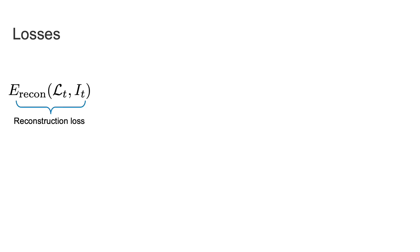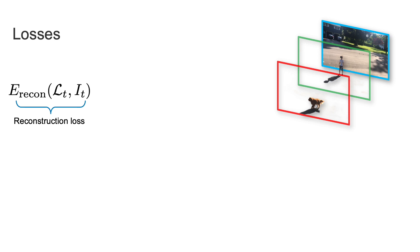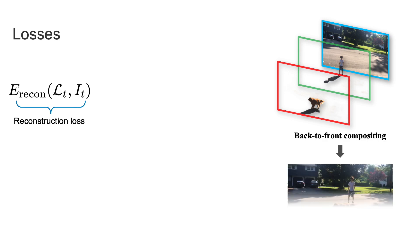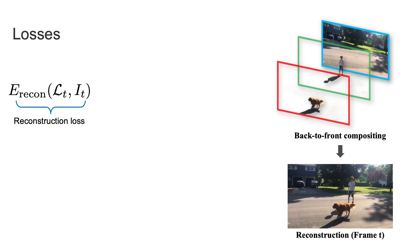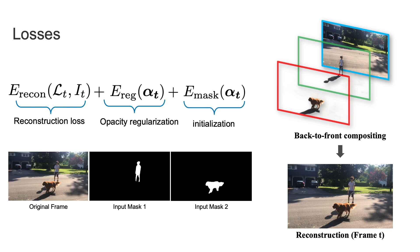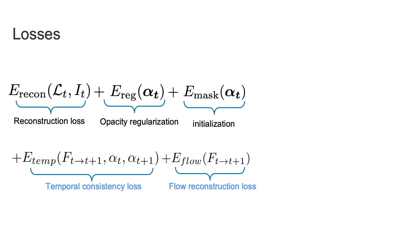We train the network to minimize reconstruction loss on the whole video. We take the predicted layers and perform back-to-front compositing to reconstruct the input frame. We additionally regularize the predicted opacity of the object layers to prevent the trivial solution of placing the entire video in those layers. For initialization, we encourage each layer's predicted opacity to match the silhouette of the input object to help the network converge. We additionally have two loss terms to encourage temporal consistency.